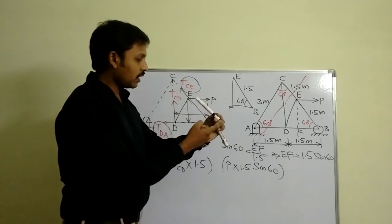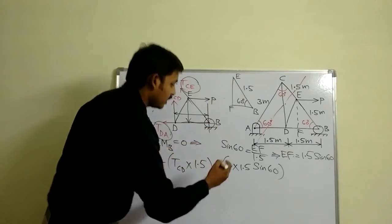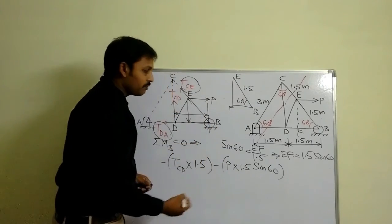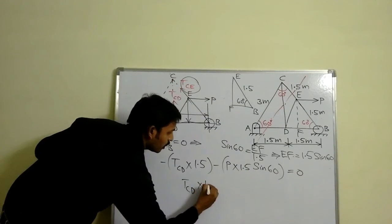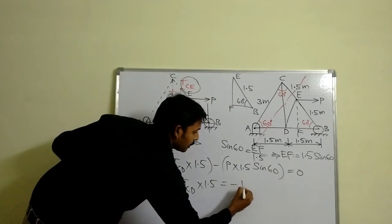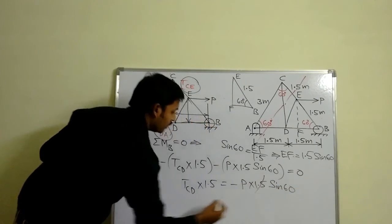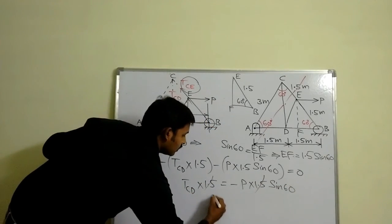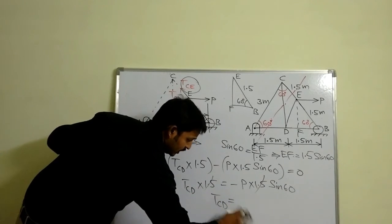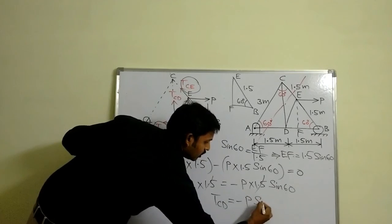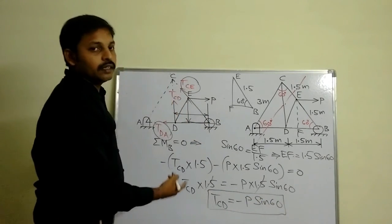P is inclined, which is like this — point B is fixed. Applying a horizontal force in this direction causes clockwise rotation. So: TCD × 1.5 − P × 1.5 sin(60°) = 0. From that, TCD × 1.5 = −P × 1.5 sin(60°). The 1.5 cancels, giving TCD = −P sin(60°). This is the axial force in member CD.